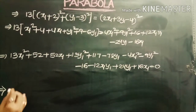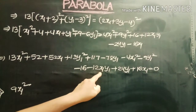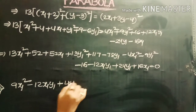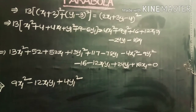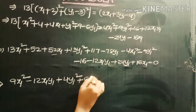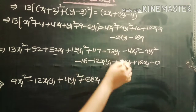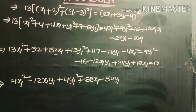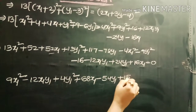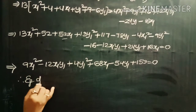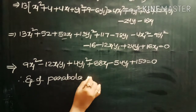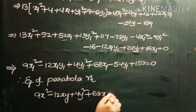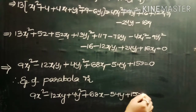After simplification: 9x1² - 12x1y1 + 4y1² + 68x1 - 54y1 + 153 = 0. Therefore, the equation of the parabola (replacing x1, y1 with x, y) is: 9x² - 12xy + 4y² + 68x - 54y + 153 = 0.